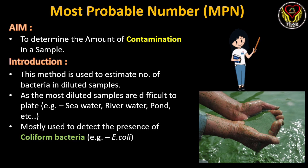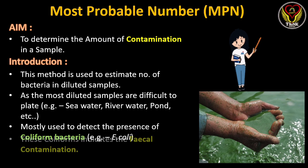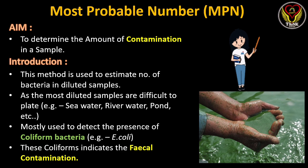We all know that water bodies or any sample will have numerous varieties of bacteria, but to test the potability of the water, we need to detect whether the water sample has coliform bacteria or not. This coliform bacteria includes a class of bacteria like E. coli, Klebsiella, etc.